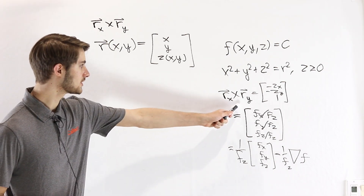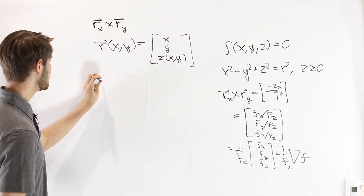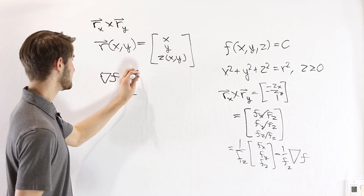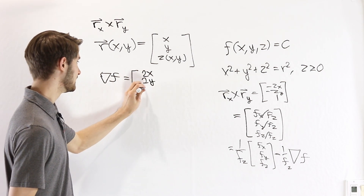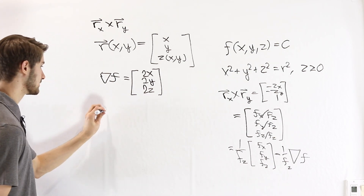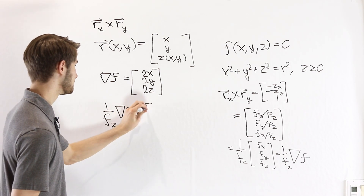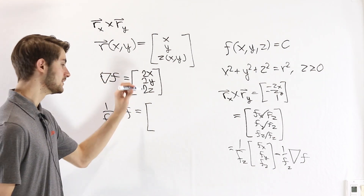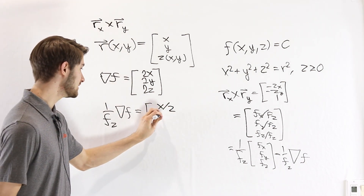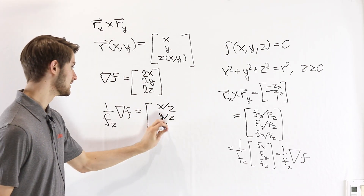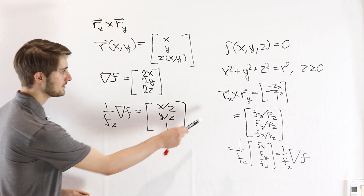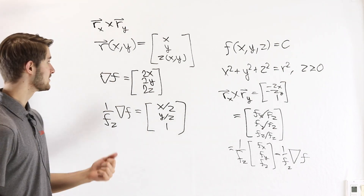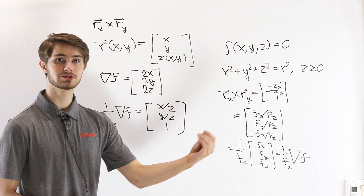As an example, let's find r_x cross r_y for the top half of the sphere. Here f = x² + y² + z², so the gradient of f is (2x, 2y, 2z), and f_z = 2z. Dividing by f_z = 2z gives x/z for the first component, y/z for the second, and 2z/2z = 1 for the third. So r_x cross r_y equals (x/z, y/z, 1), which we can plug straight into our surface integral.